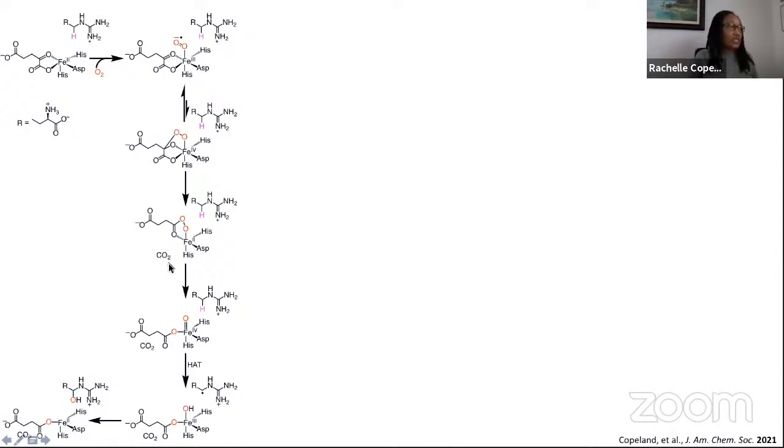This leads to decarboxylation at C1 and formation of an iron-two-peroxysuccinate intermediate. O-O cleavage at this point forms succinate in addition to this iron-4-oxo species.